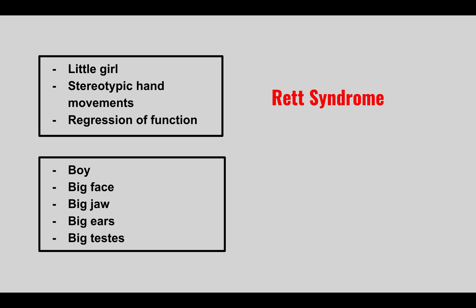The next condition: a boy with a big face, big jaw, big ears, and big testes. This is Fragile X syndrome — another trinucleotide repeat disorder with a CGG repeat. Remember 'GG' for giant gonads. It's a little boy with all these 'big' features: big face, big jaw, big ears, and big testes.